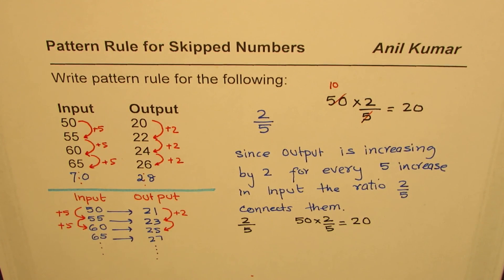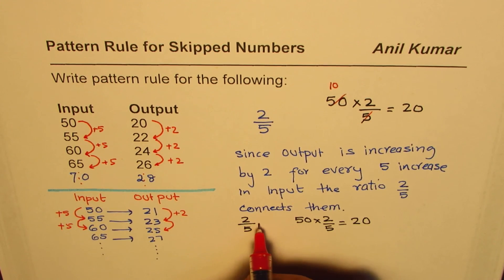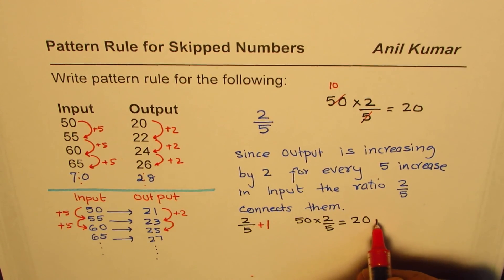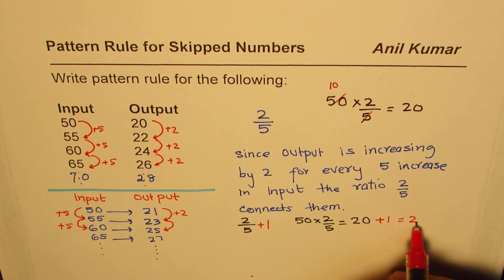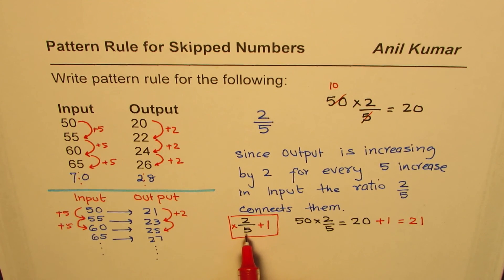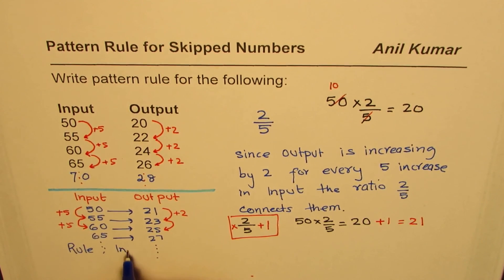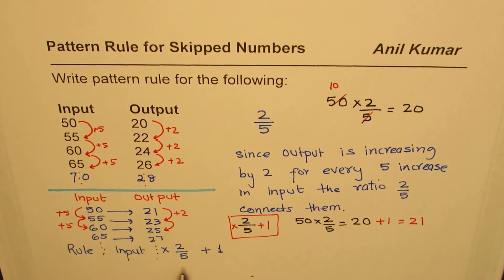So what should we do? Basically in such cases when that does not work directly, you know how it will work - you have to add 1 to get 21. So if you add 1, you do get 21. So the rule is in this case times 2 over 5 plus 1. So in this case the rule will become: input times 2 over 5 plus 1. So in input-output machine, the rule will be times 2 over 5 plus 1.